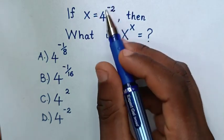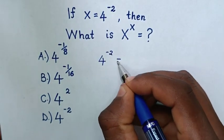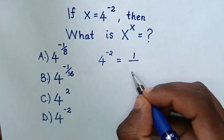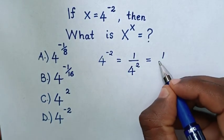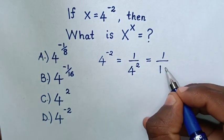Now, from here, 4 power of negative 2 is same as 1 over 4 power of 2, which is also equal to 1 over 16.